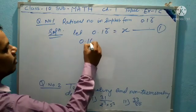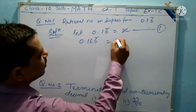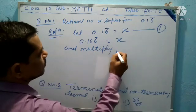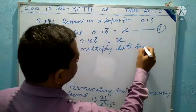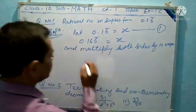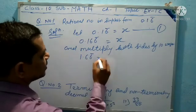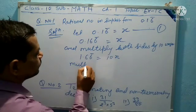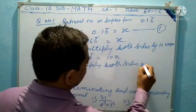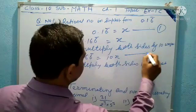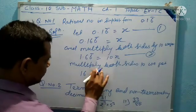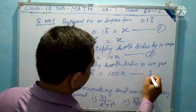Now multiply both sides by 10, giving 1.6 recurring. Then multiply both sides by 100, giving 16.6 recurring — that is equal to 100x, which is equation 3.